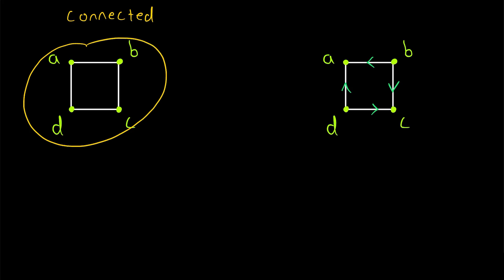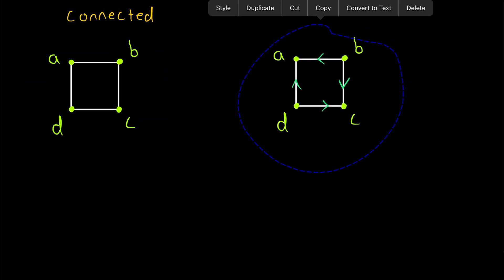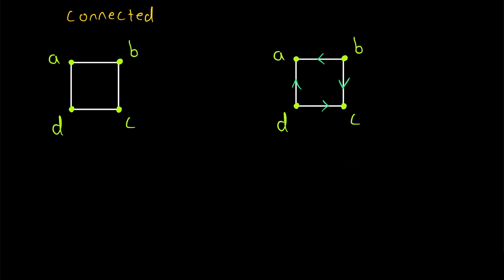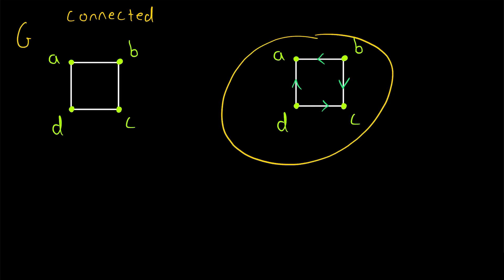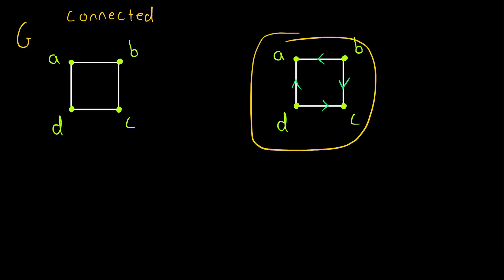If we decide to add direction to all of the edges in this graph, we might end up with this graph over here. If this graph is G on the left, this graph created by adding direction to each edge is called an orientation of G. So do we still have a connected graph over here on the right once we add direction?